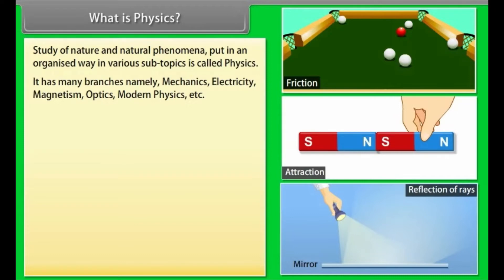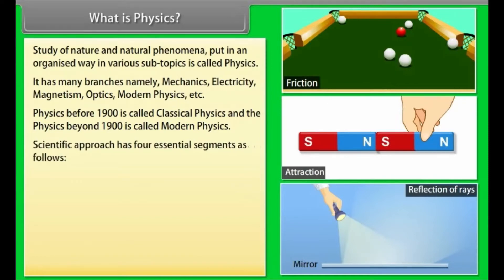Physics before 1900 is called classical physics, and physics beyond 1900 is called modern physics. Scientific approach has four essential segments as follows: 1. Observation in a systematic way, 2. Hypothesizing, 3. Analyzing the hypothesis, 4. Modifying the proposed theory. This approach is always to solve problems encountered in a scientific way.